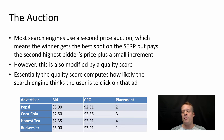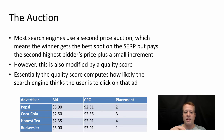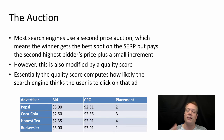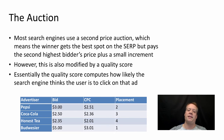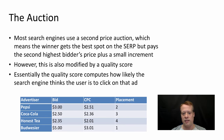Let's talk about the auction first. Most search engines use a second price auction, which means the winner gets the best spot on the search engine results page but pays the second highest bid price plus some small increment. However, this is also modified by a quality score — essentially a measure of how likely the search engine thinks the user is to click on an ad. The search engines are maximizing their expected value: the bid times the probability of clicking.